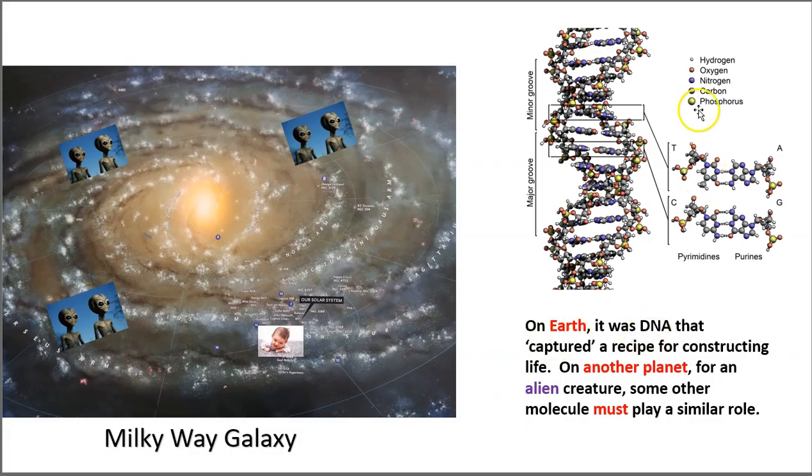Now, on Earth, it was DNA that captured a recipe for constructing life. But on another planet, for an alien creature, some other molecule must play a similar role. If these organisms are going to be alive, then there must be some kind of recipe for the construction of that organism that can be duplicated and passed on as they reproduce. And many scientists think that an evolutionary process is going to be playing out everywhere in the galaxy where life emerges. So, if these creatures don't have exactly the DNA molecule, and it's likely it would not be exactly DNA, there must be some other molecule or molecules that are performing the hereditary role.